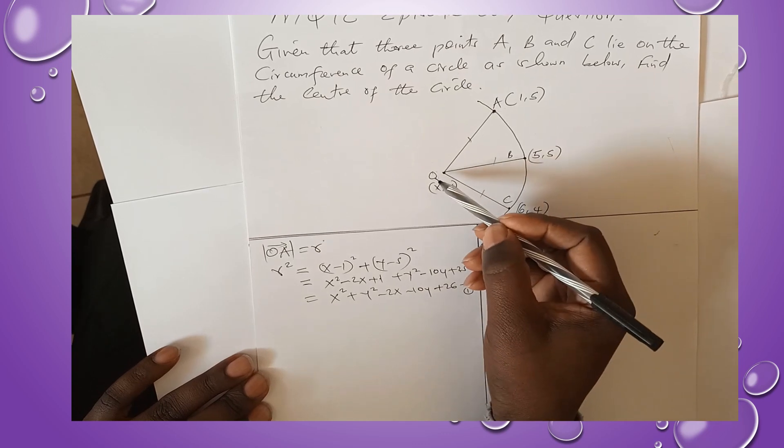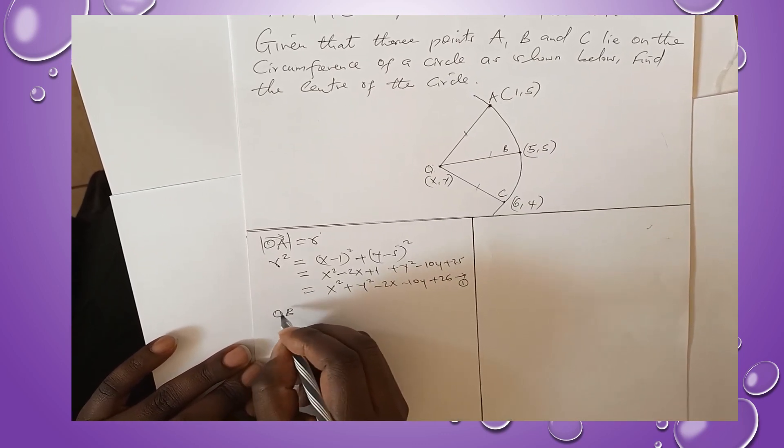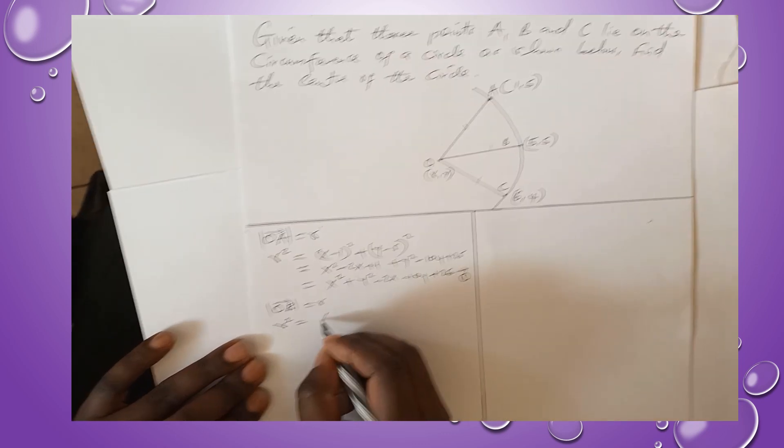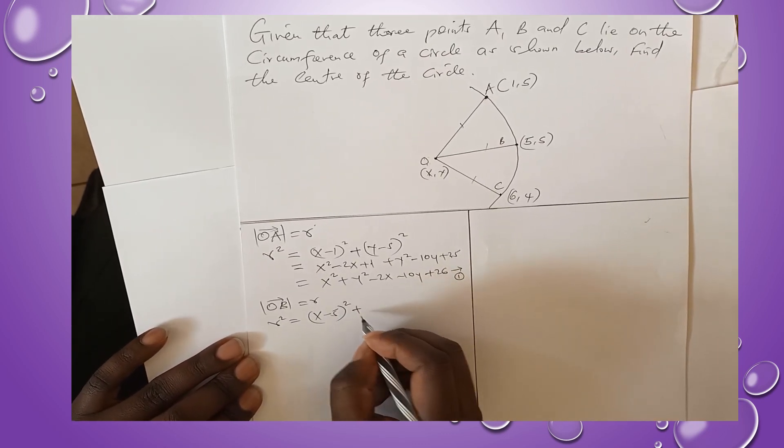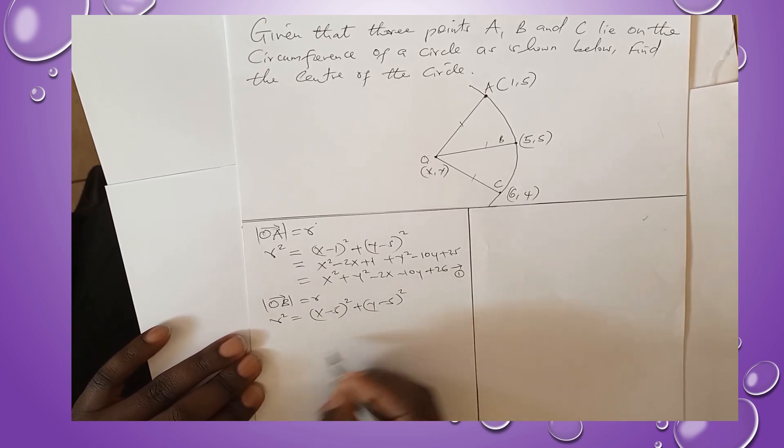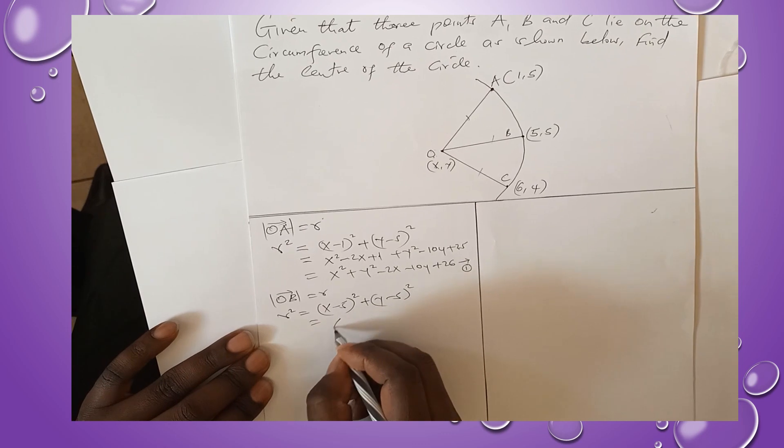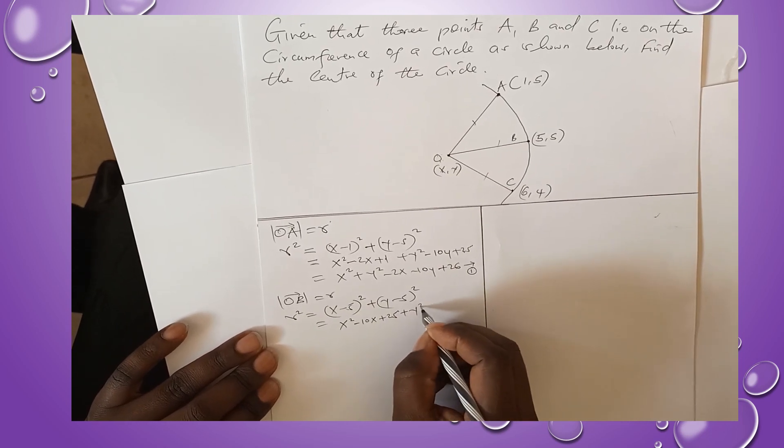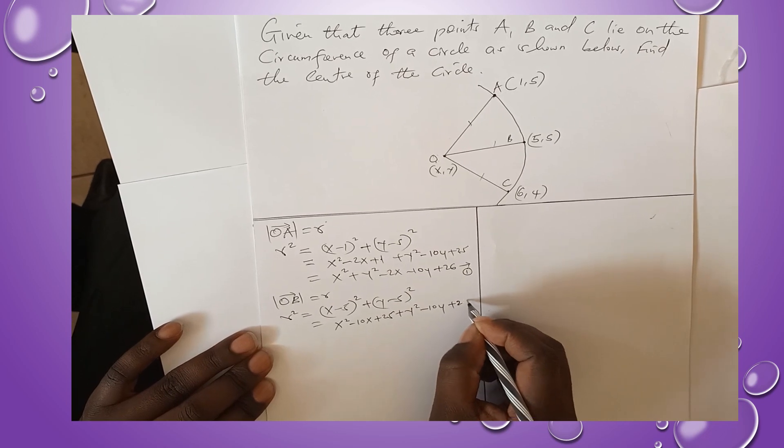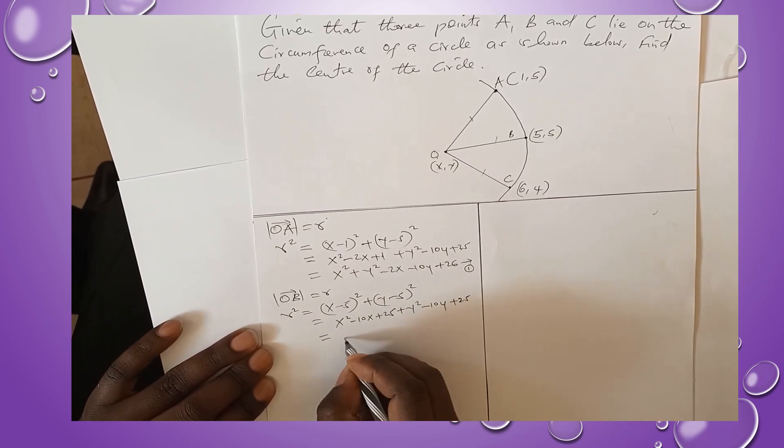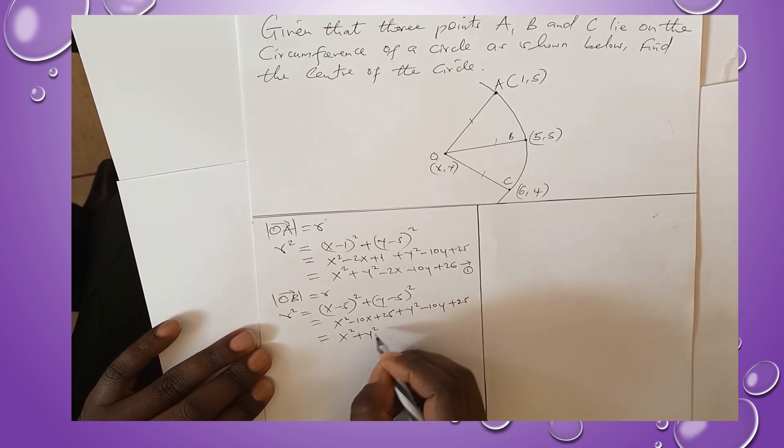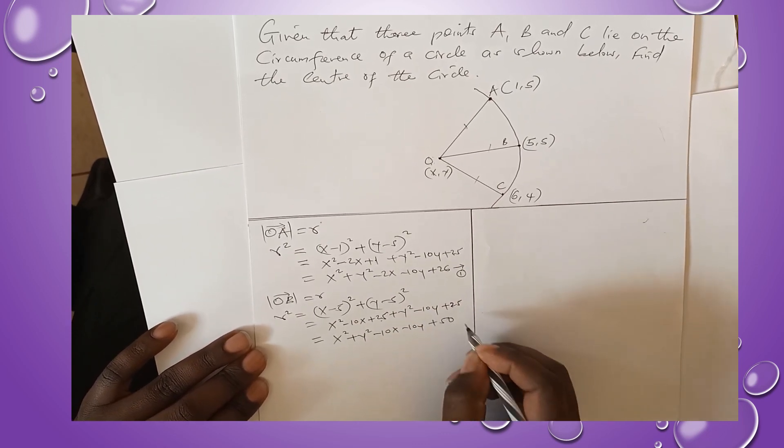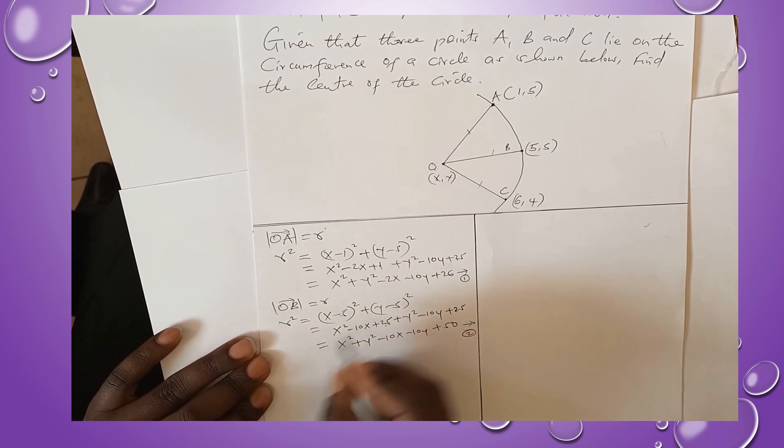Let's use now the point O and B. The magnitude of OB will give us r² = (x - 5)² + (y - 5)². When we expand this, we are going to get x² - 10x + 25 + y² - 10y + 25. Putting like terms together, we will have x² + y² - 10x - 10y + 50. That's our second equation.